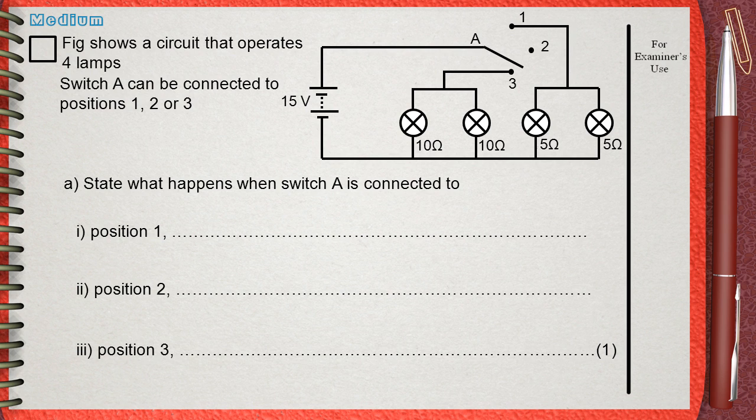The figure shows a circuit that operates four lamps. Switch A can be connected to positions 1, 2, or 3. State what happens when switch A is connected to position 1, position 2, and position 3.